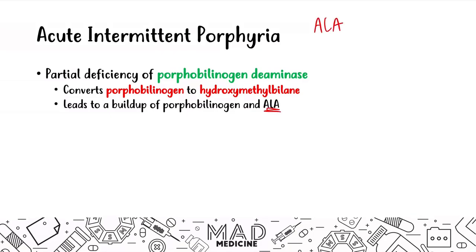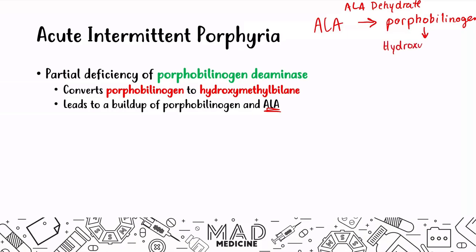ALA is converted into porphobilinogen via ALA dehydratase, and then porphobilinogen is converted into hydroxymethylbilane via porphobilinogen deaminase. When you block this enzyme, you get an increase in porphobilinogen and also an increase in ALA — aminolevulinic acid. So both porphobilinogen and ALA are increased in amount in your body.